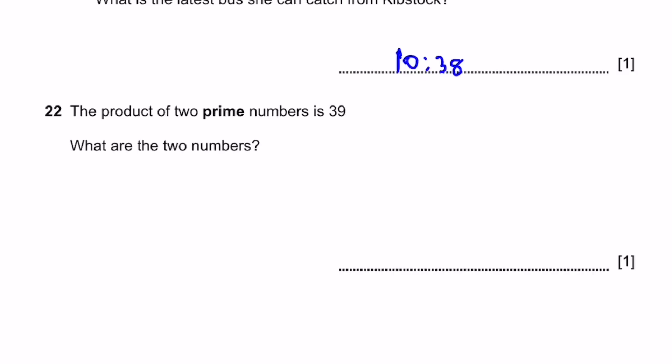Question 22. The product of two prime numbers is 39. What are these two numbers? 13 multiplied by 3. So 13 times 3 is 39. That's the answer.